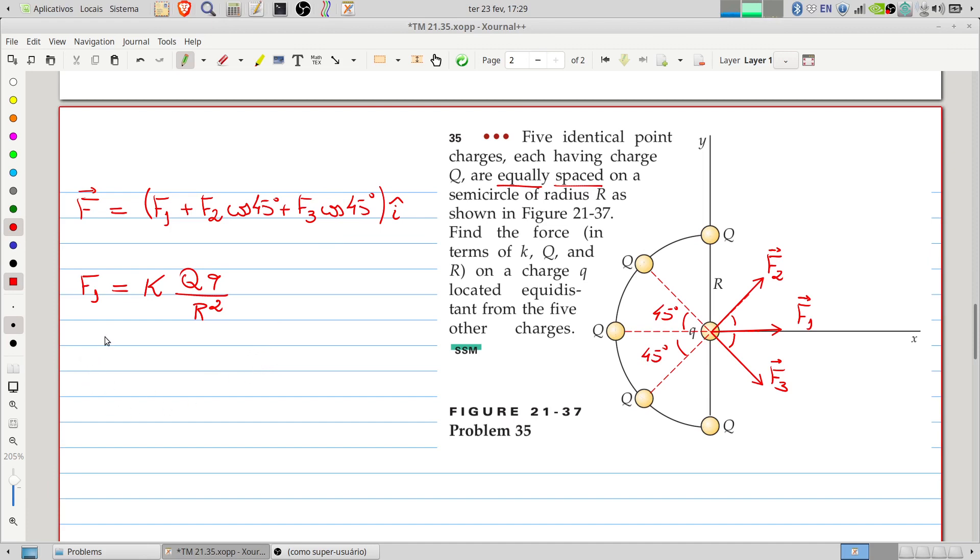So, we will have F equals F1 plus these terms will be equal to each other. So, plus 2 times F2, that is K times Q times Q divided by R squared times the square root of 2 divided by 2 in the horizontal direction.